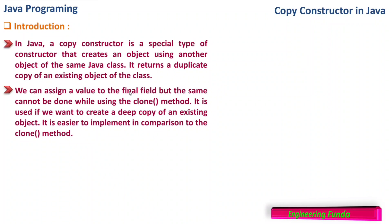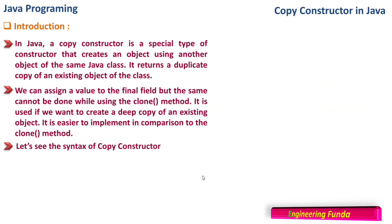With the clone method, it is not possible to do the cloning of fields which are defined as final in a class. The copy constructor is used if we want to create a deep copy of an existing object. It is also easier to implement in comparison to the clone method.